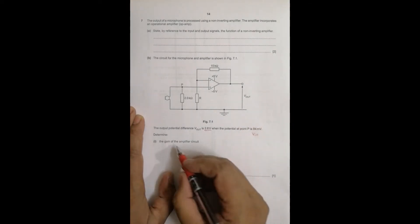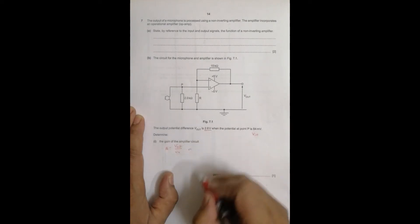So determine the gain of the amplifier. So the gain is equal to V out by V in which gives us, it's equal to 2.6 divided by 8.4 milli, that means 8.4 into 10 to the power minus 3.